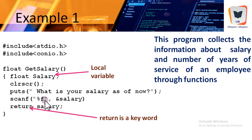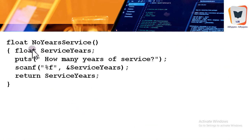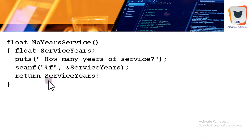The user is prompted for their salary, which is read as a float variable. The keyword return enables the salary value to be returned to the calling function. Similarly, there is another function returning the number of years of service — float service_years is the local variable. The user is questioned and enters the number of service years, which is promptly returned to the calling function.